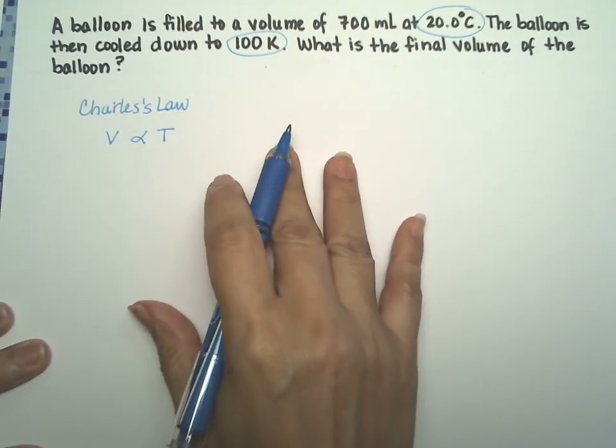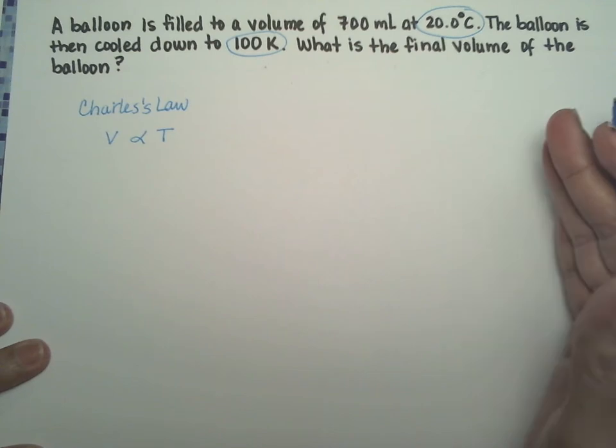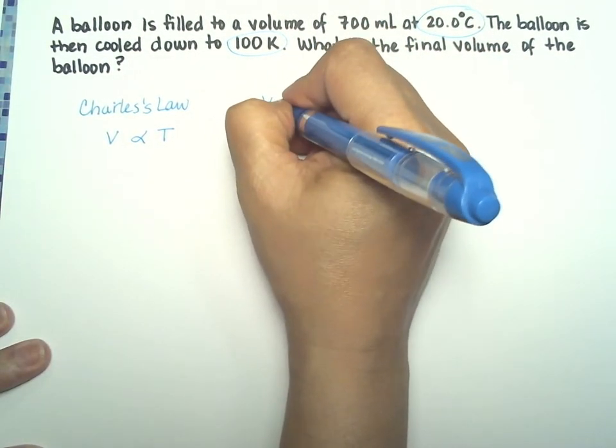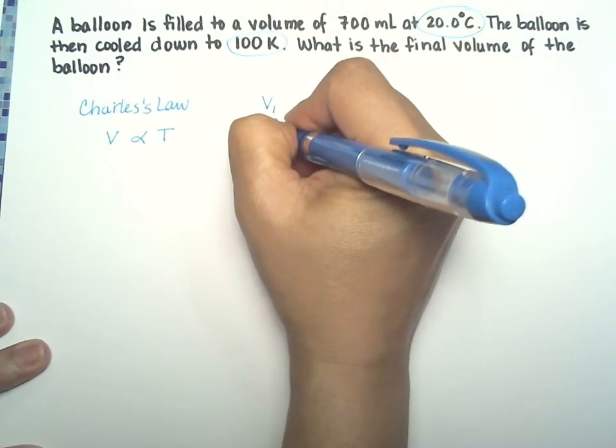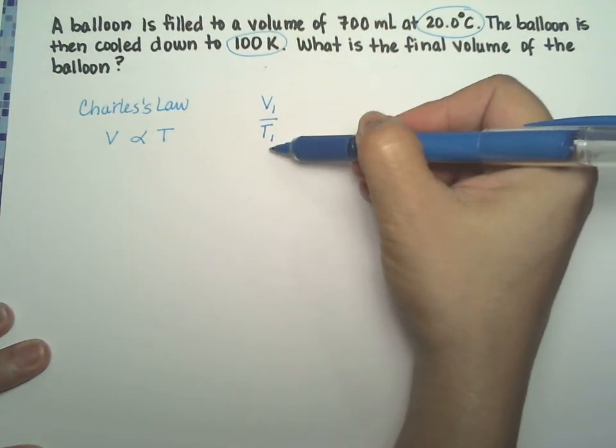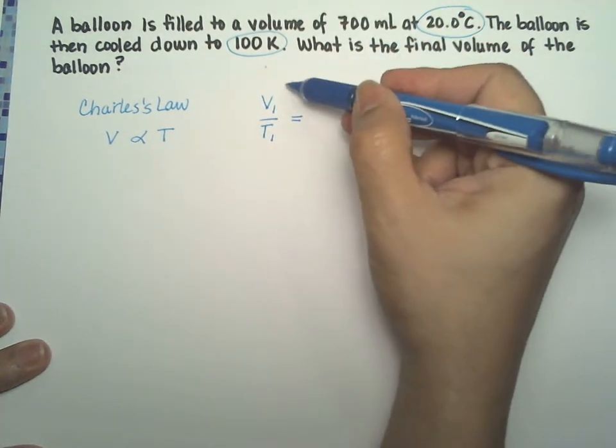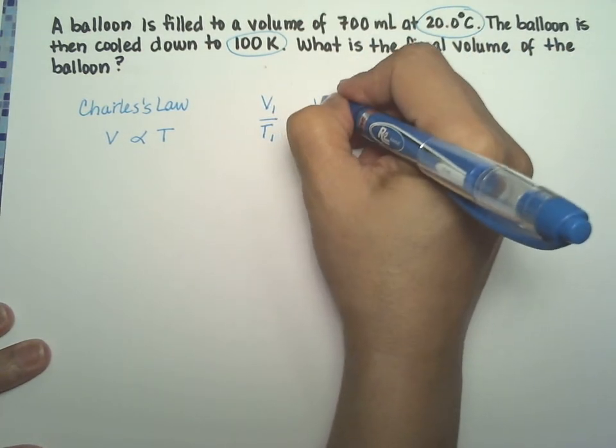All right, so it's an initial state, final state kind of problem. So we can use Charles' law this way. We know that V1 over T1 is going to equal a constant, so we can equal initial conditions to final conditions.